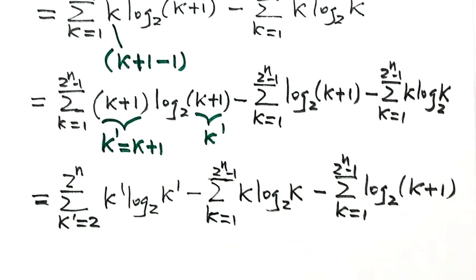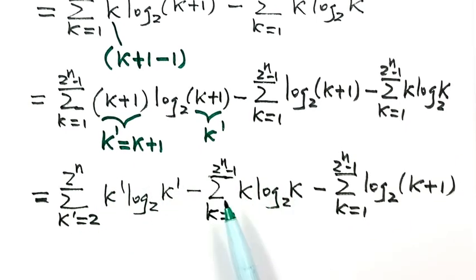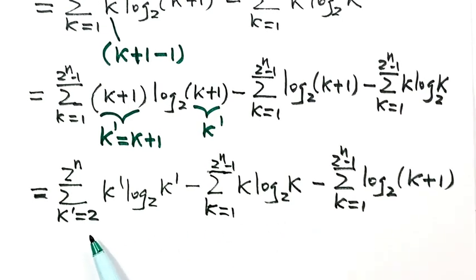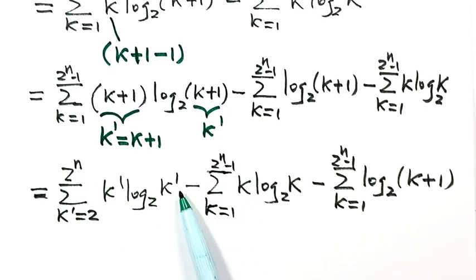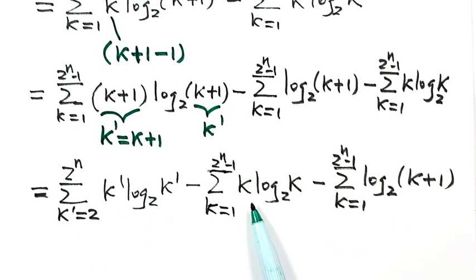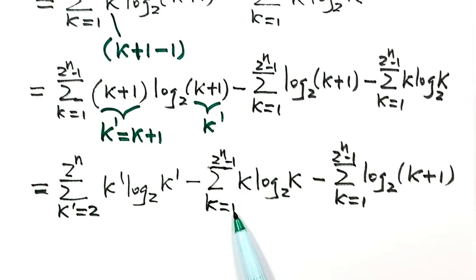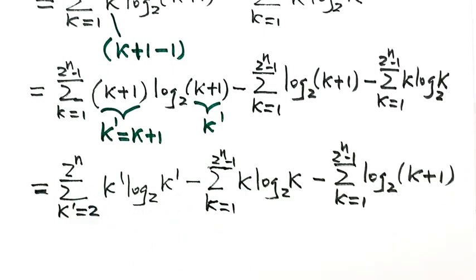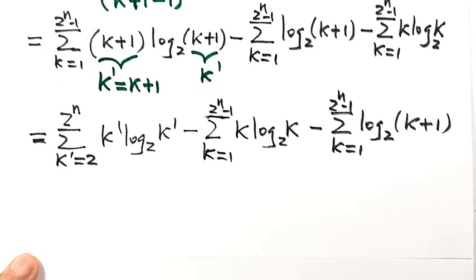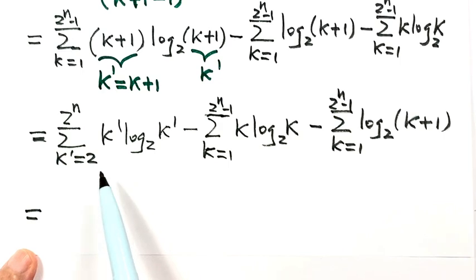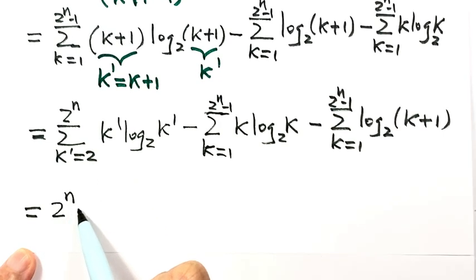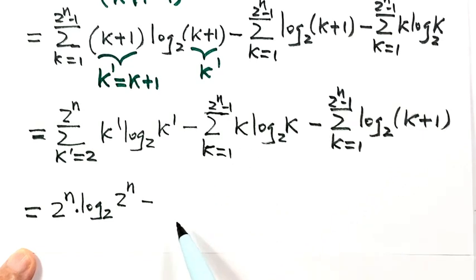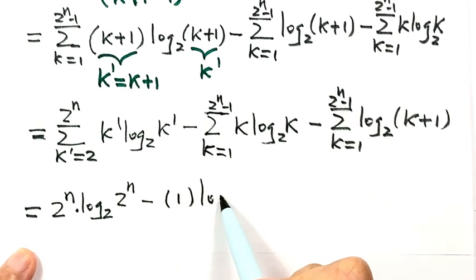Looking at these two sums, the inside expressions have the same pattern, but one runs from 2 to 2 to the power n and the other from 1 to 2 to the power n minus 1. When we do the subtraction, all the terms cancel except the first term when k is 1 and the last term when k prime equals 2 to the power n. So after simplification, we get 2 to the power n times log base 2 of 2 to the power n, minus 1 times log base 2 of 1.